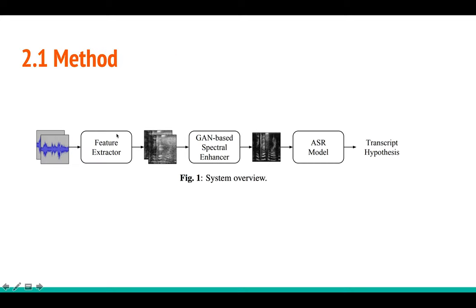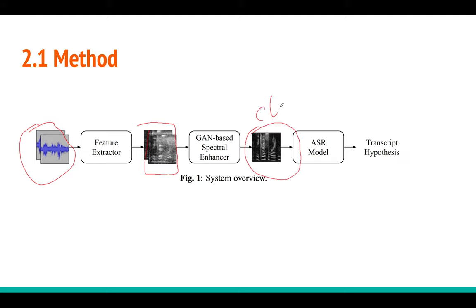Then we will see FSE-GAN, the proposed approach in this paper, and the ASR model used so the cleaned audio can go as input to it. The whole pipeline is: noisy audio goes to a feature extractor producing a log mel filter bank spectrogram, that goes into a GAN-based spectral enhancer which cleans it, and you get a clean spectrogram. That clean spectrogram goes as input to the ASR model, which outputs the transcript — that is the whole idea.